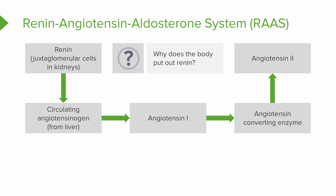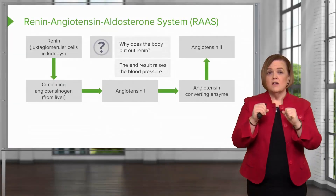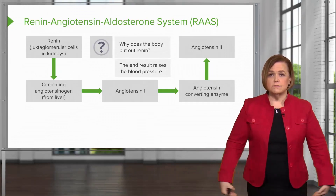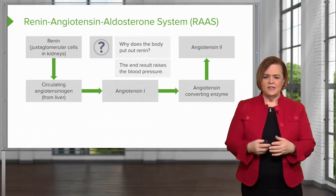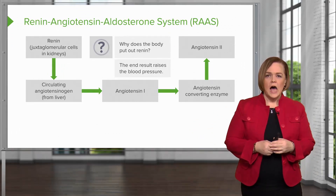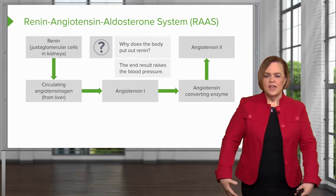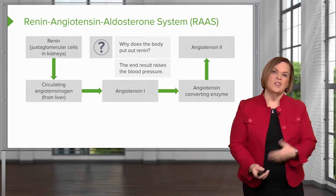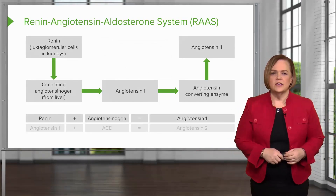And you end up with angiotensin 2. The end result of angiotensin 2: my blood pressure is raised two ways — potent vasoconstriction and volume expansion. That reminds me of that little girl in Willy Wonka. She was the blueberry girl and that volume blew right up. So look at the breakdown on the bottom of your screen.